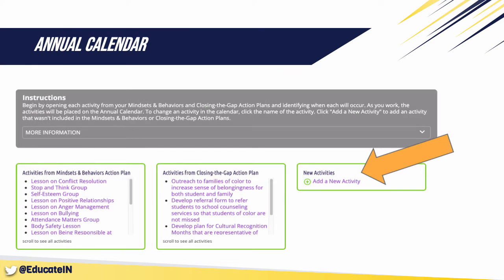Next, you can begin adding new activities. These are other activities besides your lessons, groups, and indirect activities from your Mindsets and Behaviors Action Plan and Closing the Gap Action Plan that you already know will be on the counseling program schedule — such as back-to-school nights, college information sessions, and so on — as well as any recurring activities such as committees or meetings that meet regularly. A pop-up window will appear where you can enter the name or type of activity and indicate whether it's a direct student service, indirect student service, or related to managing your program.